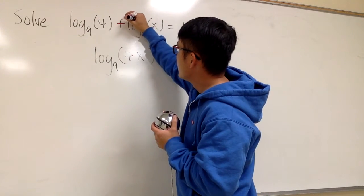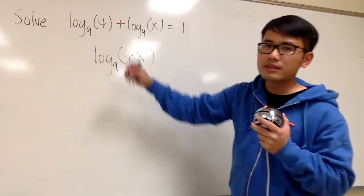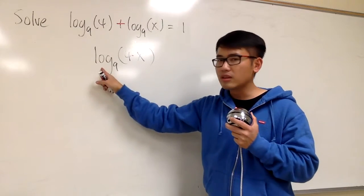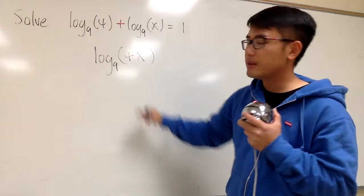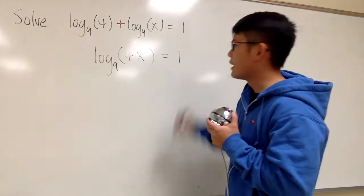Okay, once again, when you add two logs, you can put them together into just one single log, and the inside is going to be a multiplication. And the right-hand side, this is equal to 1.